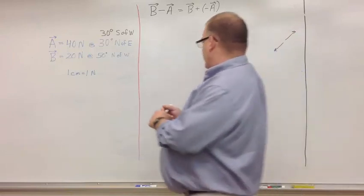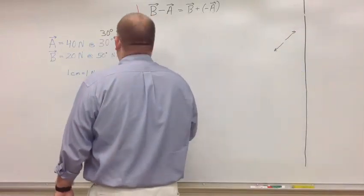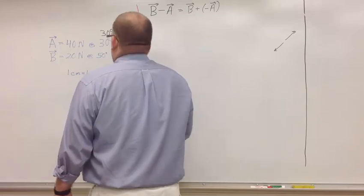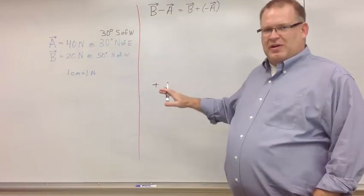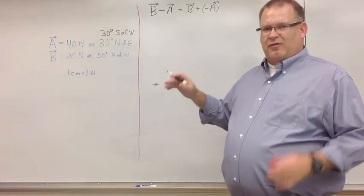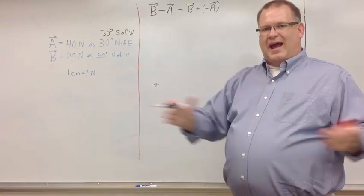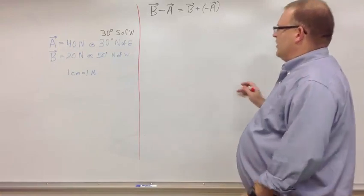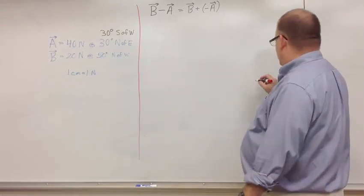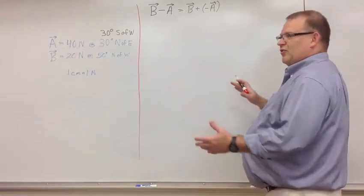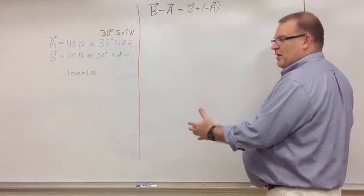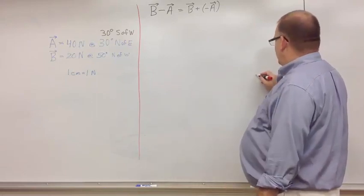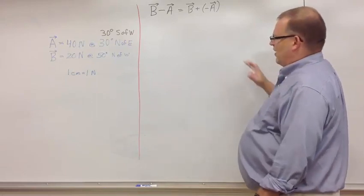So I have my origin to start. And this is so much easier when you have graph paper, because then you can just start from your origin. You can actually draw the axis out. Let me start with vector B. Vector B is going to go north of west. With graph paper, you can start in the middle. I'm going to start over here a little bit to the right, so I know I have enough room.